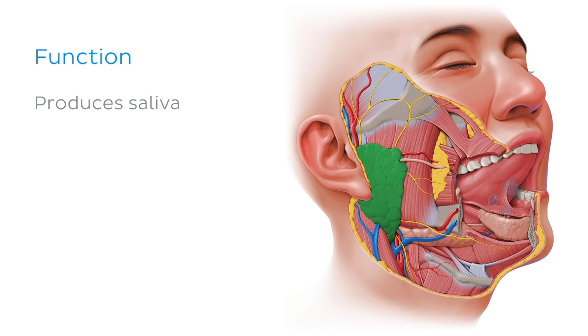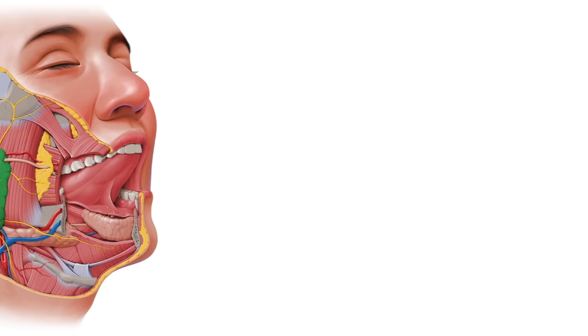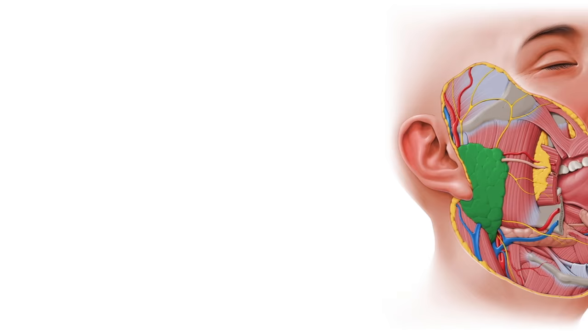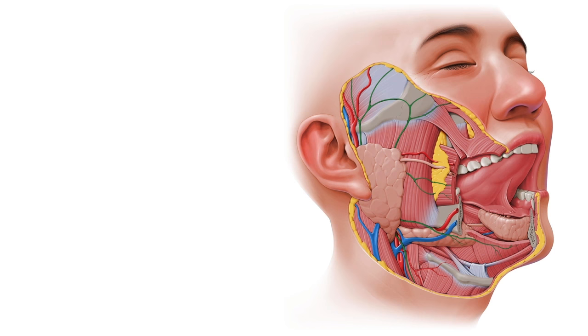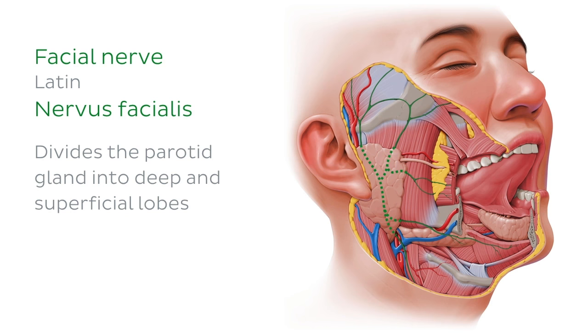It also functions as an antimicrobial agent in the mouth. Next, we're going to talk about some associated structures of the parotid gland. The structures we're going to talk about, and their relationship with the parotid gland, is of great clinical significance, particularly during parotid gland surgery. The first structure is the facial nerve, which divides the parotid gland into deep and superficial lobes.